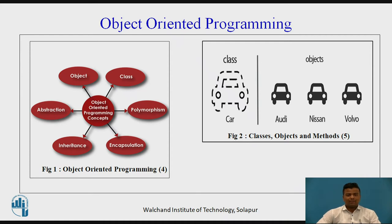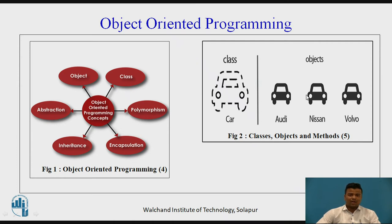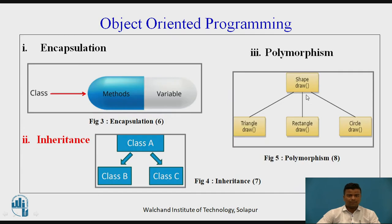Classes are the main parts of object-oriented programming in Java. Objects, data, methods, and variables are parts of classes. For example, car is the class and the different types of cars are the objects. Object-oriented programming consists of encapsulation, polymorphism, and inheritance.